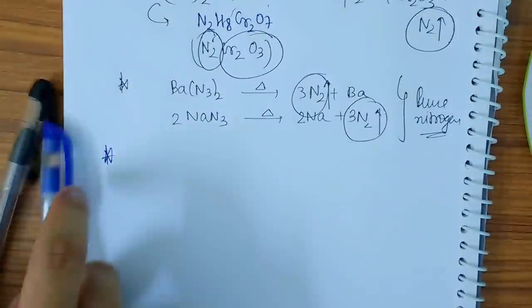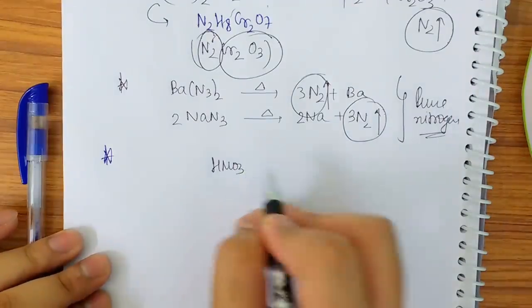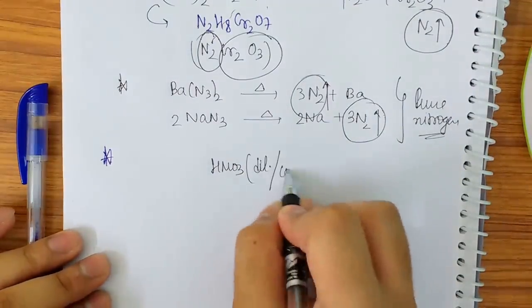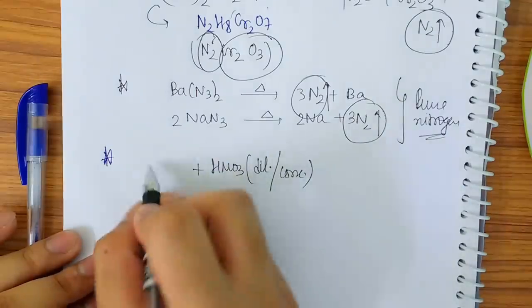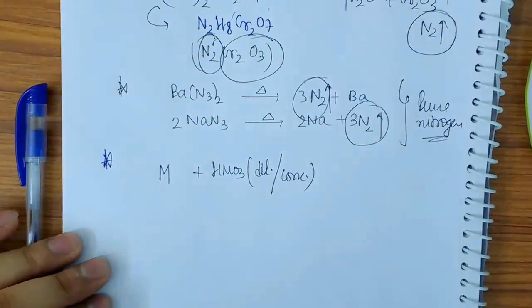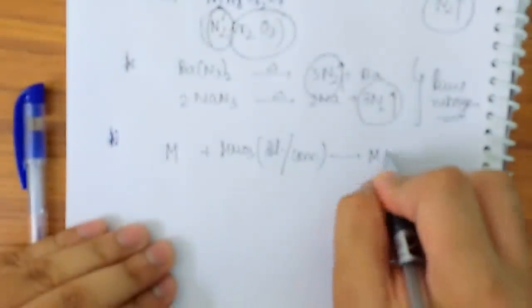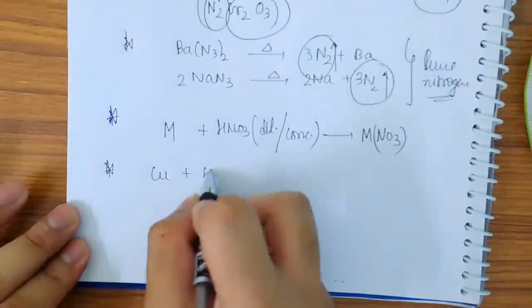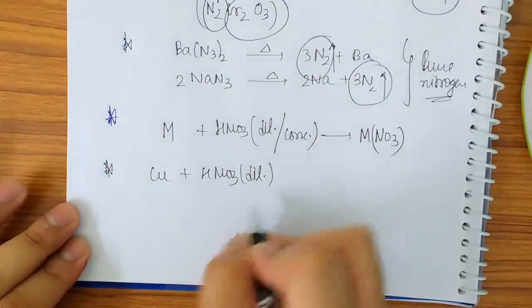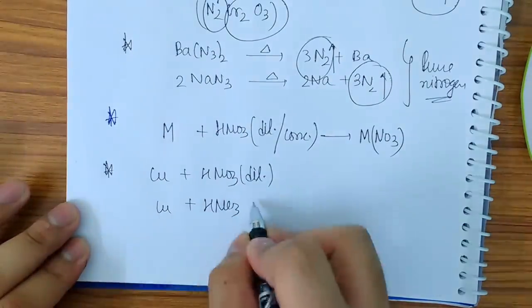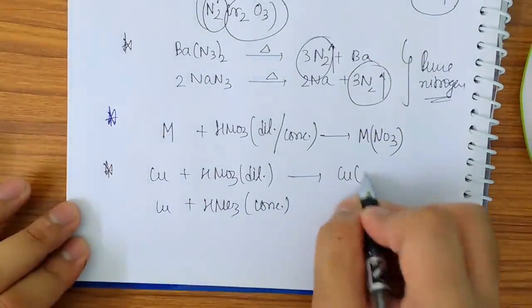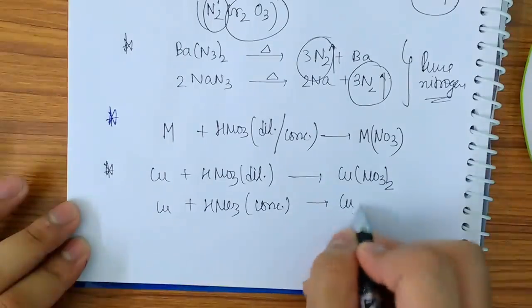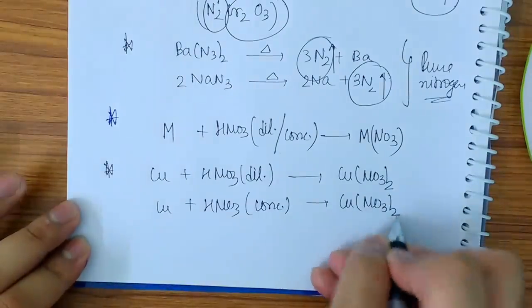Next thing: see, first of all I would like to tell you that whenever I have HNO3, be it dilute or concentrated, I react with any metal, be it more reactive or less reactive, then always one product will be MNO3. Let me take an example. If I take Cu + HNO3 diluted or Cu + HNO3 concentrated, one product will always be Cu(NO3)2. So Cu(NO3)2.